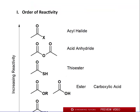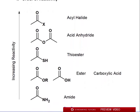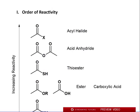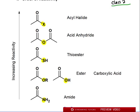Let's get started. The first thing to keep in mind is the order of reactivity for class two. A class two is when Z — whatever group that is — is more electronegative than carbon. With class one, Z is equal or less electronegative than carbon. For class two, the atom Z touching the carbonyl carbon is more electronegative. We see this with halogens, oxygens, sulfur, and nitrogen — all class two atoms.